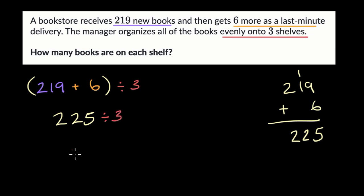So we could do a little bit of long division now. How many times does three go into 225? Well, we could see three doesn't go into two, but it does go into 22 seven times. Seven times three is 21.